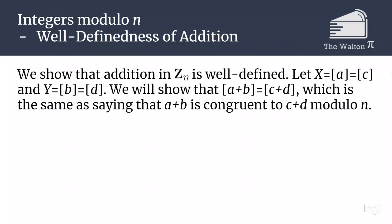To start, we have to show that no matter which representative we pick for the class of x, meaning the class of a or the class of c, it doesn't matter if we add a and b or add c and d to get the same end result. We are going to be showing that a plus b is congruent to c plus d if a and c are both in the same equivalence class and b and d are in the same equivalence class.